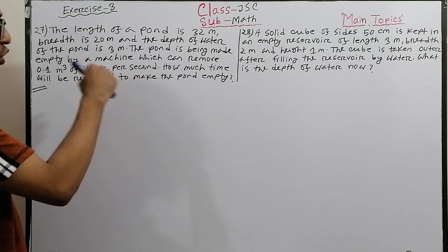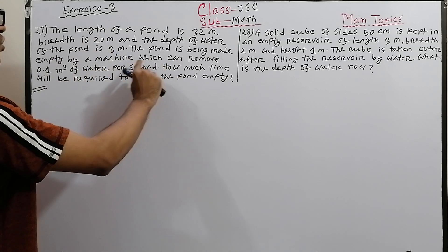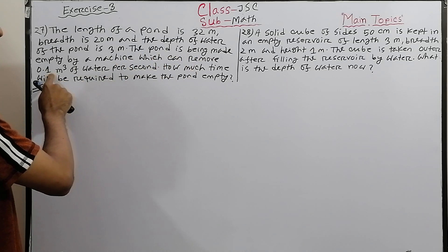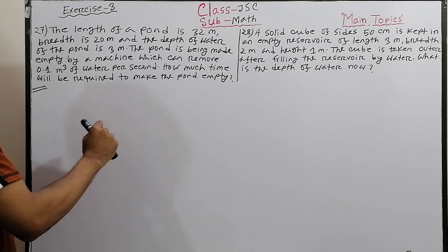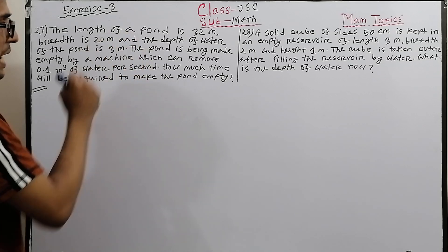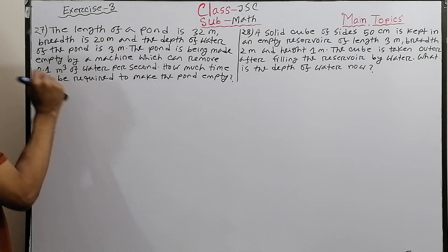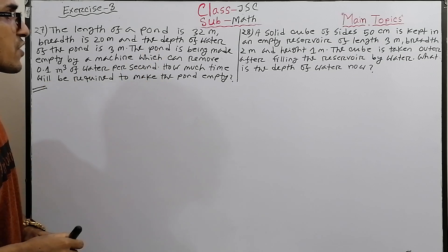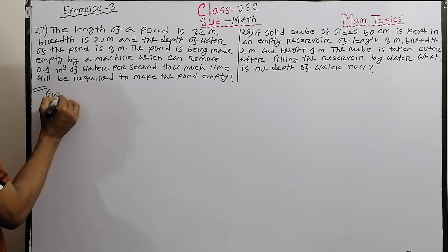The pond is being made empty by a machine. The machine can remove 0.1 cubic meters of water per second. So the rate of emptying is 0.1 cubic meters per second. We need to find how much time will be required to make the pond empty.